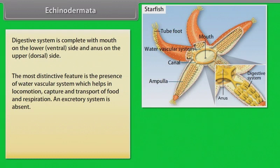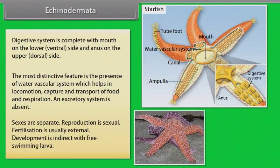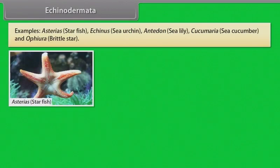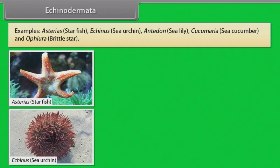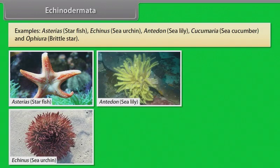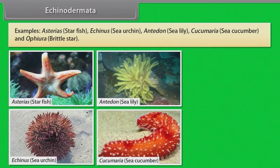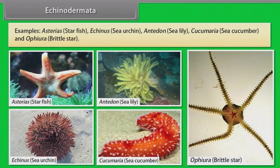An excretory system is absent. Sexes are separate and reproduction is sexual. Fertilization is usually external. Development is indirect with free-swimming larvae. Examples: Asterias, that is starfish; Echinus, that is sea urchin; Antedon, that is sea lily; Cucumaria, that is sea cucumber; and Ophiura, that is brittle star.